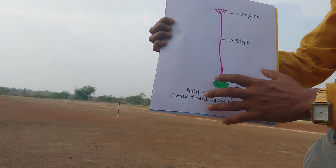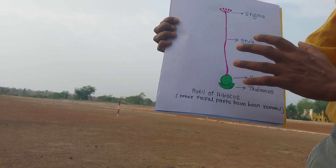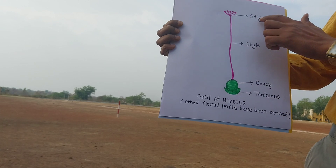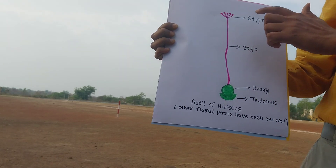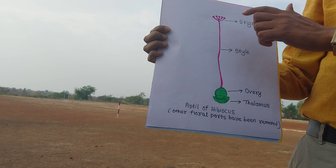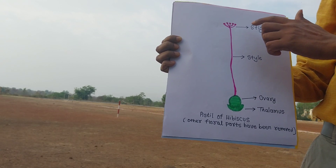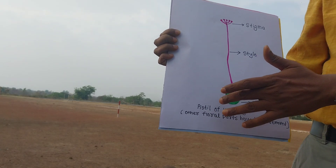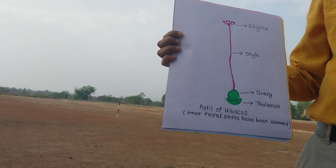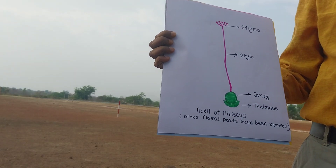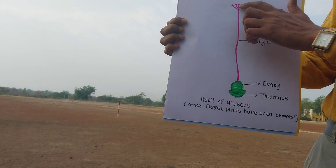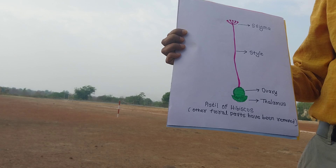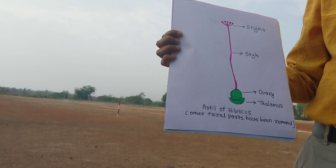When we see this Pistil, it has three parts. The upper part is called the stigma, and this is the platform for the pollen grain — pollen grains fall on the stigma. In Hindi it is called Strikesar; yesterday we saw the Pungkesar. The stigma can be of different size, different color, different shapes — feathery or hairy.